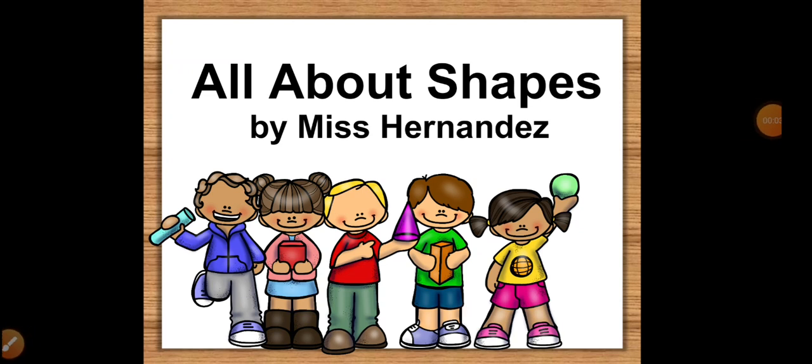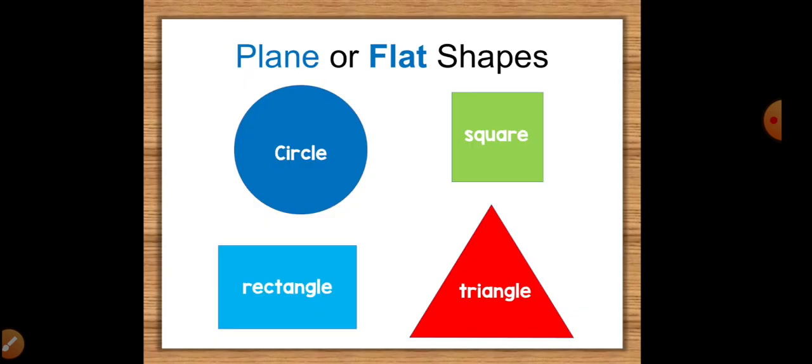Let's learn about shapes together. Some shapes are plane or flat. These are sometimes called two-dimensional or 2D shapes. A flat shape looks like a carpet when you lay them down. Here are some flat shapes: circle, square, rectangle, triangle.